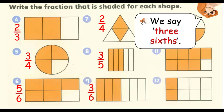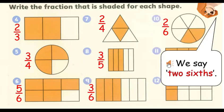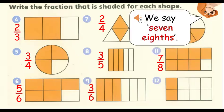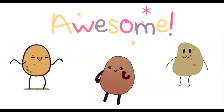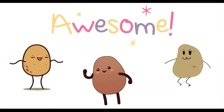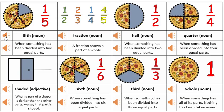We say three fifths. We say seven eighths. We say two eighths. We say five fifths. It has been divided into five equal parts.